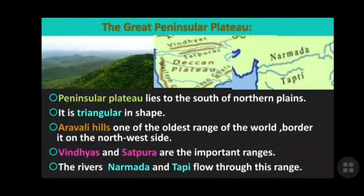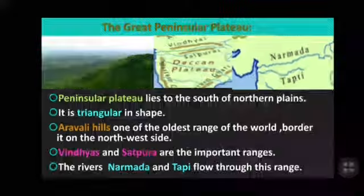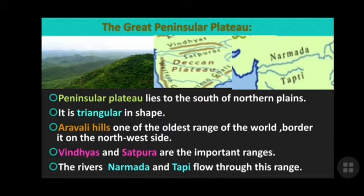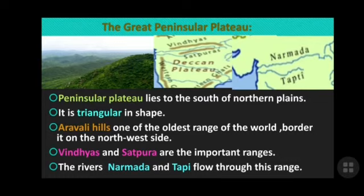The next division is the Great Peninsular Plateau, which lies to the south of the Northern Plains. It is triangular in shape because a peninsula is a piece of land surrounded by water on three sides. The Aravalli Hills, one of the oldest ranges in the world, border the northwest side. Other important ranges are the Vindhyas and Satpura, and the rivers Narmada and Tapi flow through this region. The famous Deccan Plateau is the largest plateau in India, and the Chota Nagpur Plateau is another example.